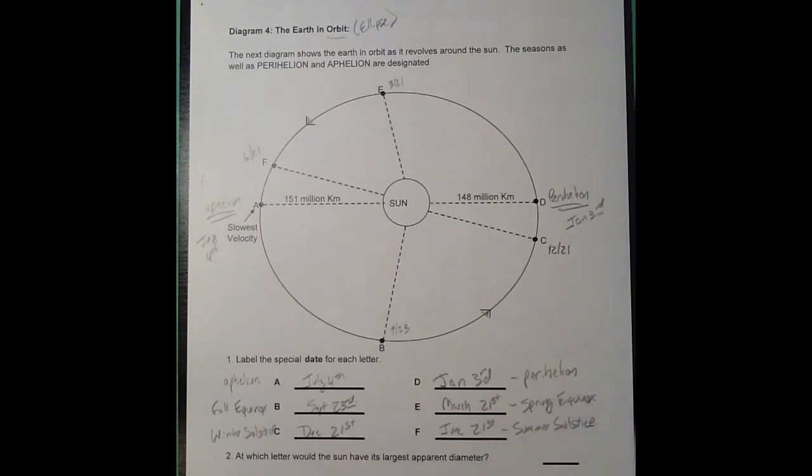Now, which letter would the sun have its largest apparent diameter? The apparent diameter is not the real size, that's the size that you see it. So obviously, if you're closer, you see something larger, so you would expect that to be D.